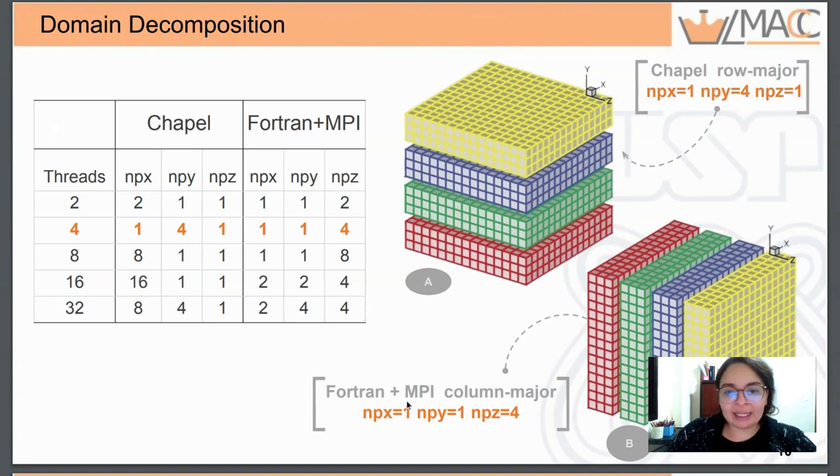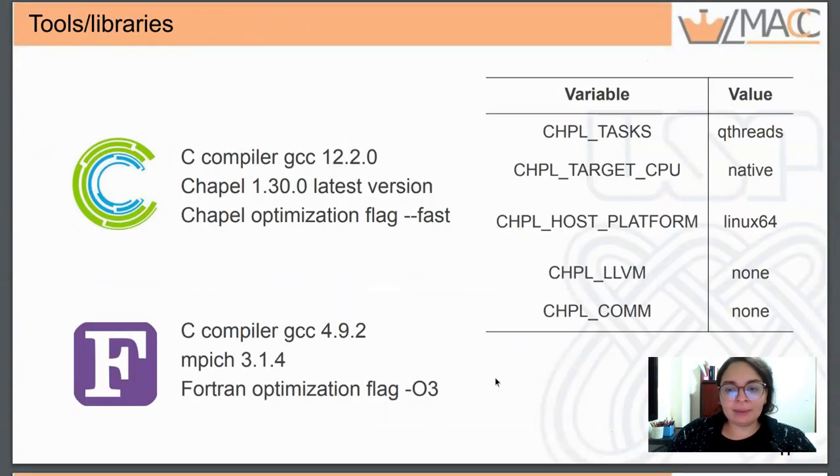Since Chapel is row-major and Fortran is column-major, I needed to try different domain decompositions. For example, for four processes, the best decomposition for Chapel is one subdomain in the X direction, four subdomains in the Y direction, one subdomain in Z. For Fortran I need one subdomain in X, one subdomain in Y, and four subdomains in Z.